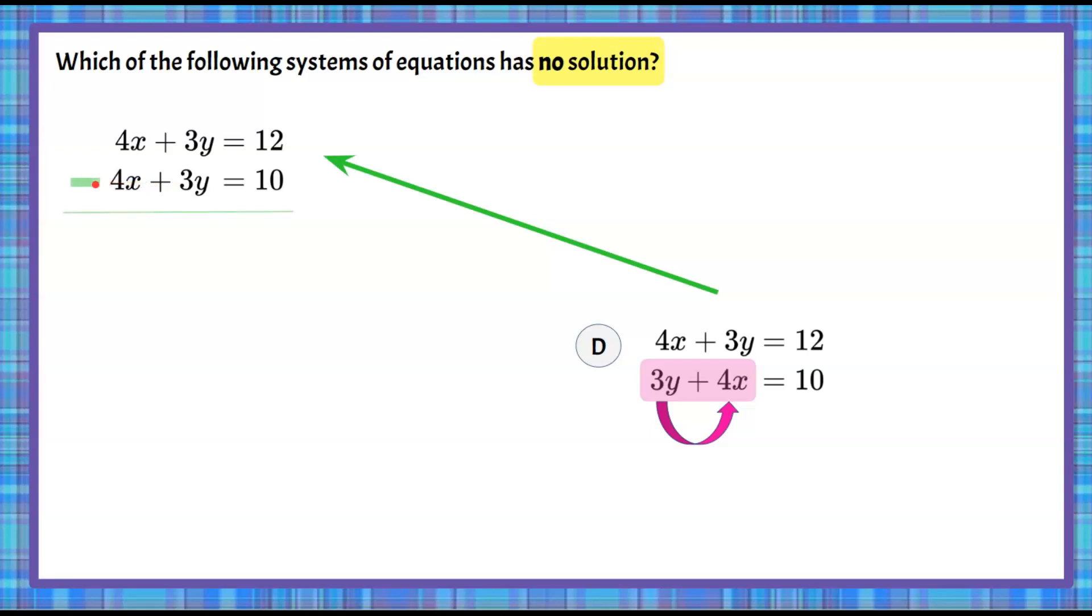Now I'm going to subtract one equation from the other in the process of elimination. So when I subtract the first term, I must subtract the second, and then the constants. Zero pair, zero pair, giving me 0 equals 12 subtract 10, which is 2.